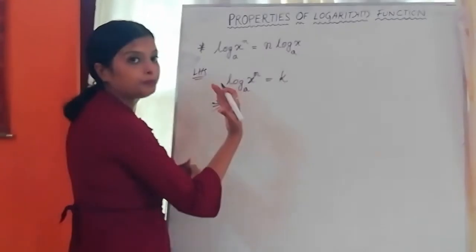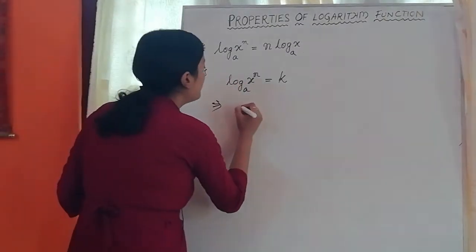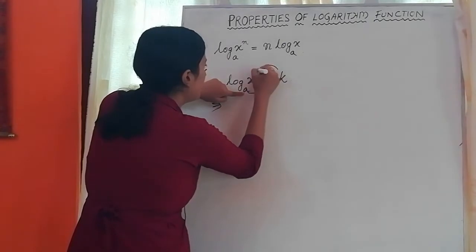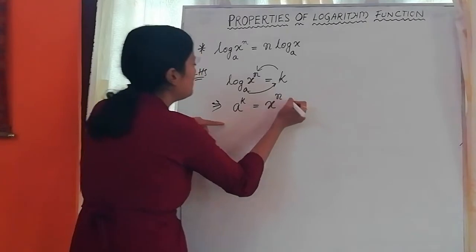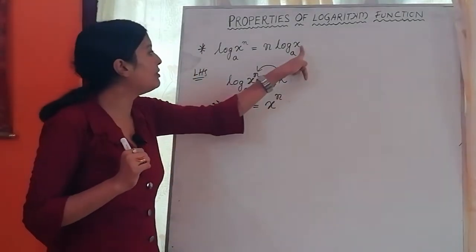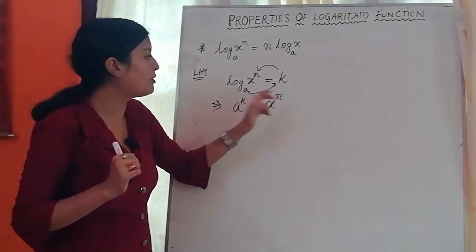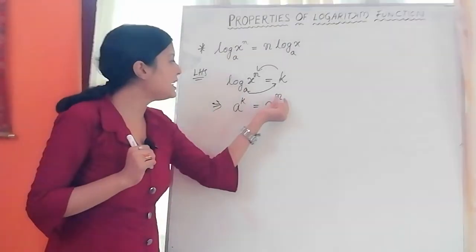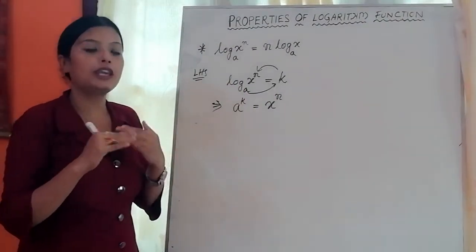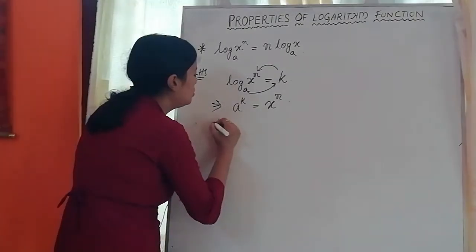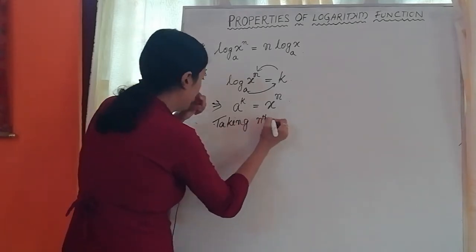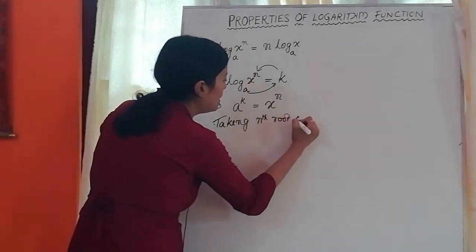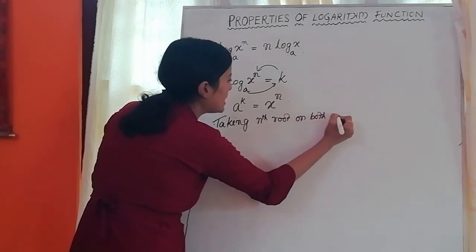Converting to exponential form: a to the power k equals x to the power n. Now instead of raising x to the power n, I will take the nth root on both sides. Taking the nth root on both sides, the left side becomes a to the power k by n, and the right side becomes x.